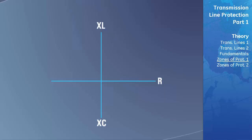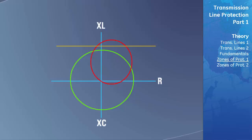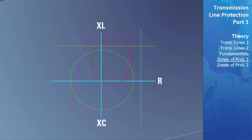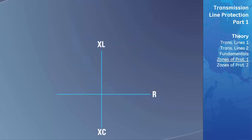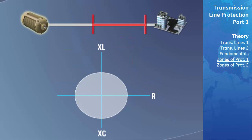The zone types are: an impedance zone, an admittance or Mho circle zone, a reactance zone, a resistance zone, and a quadrilateral zone. Let's take a look at each of these operating characteristics for distance relaying operating zones.